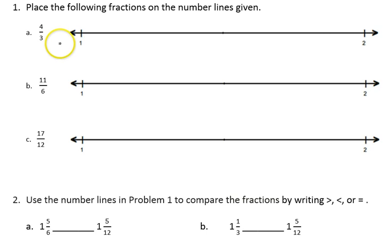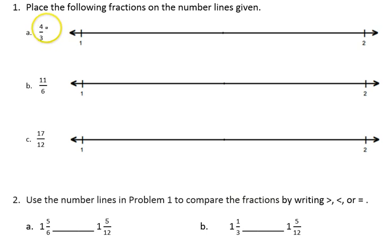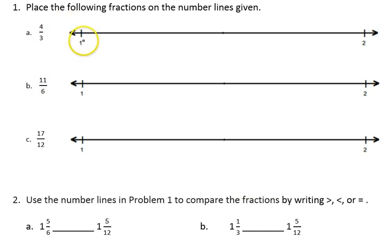The first directions say to place the following fractions on the number lines. What you'll notice about the fractions is that they're all improper fractions, meaning the numerator is greater than the denominator, which also tells us that the fractions are greater than one whole. So you can see that the number line starts with one whole and ends at two wholes. We're going to start at 1 and plot the fractions between 1 and 2.